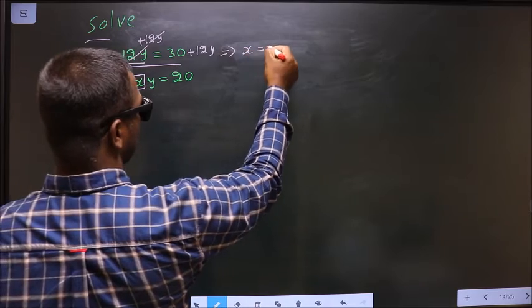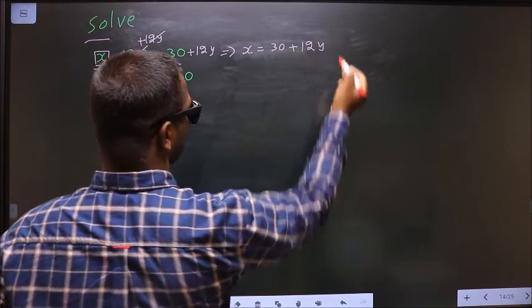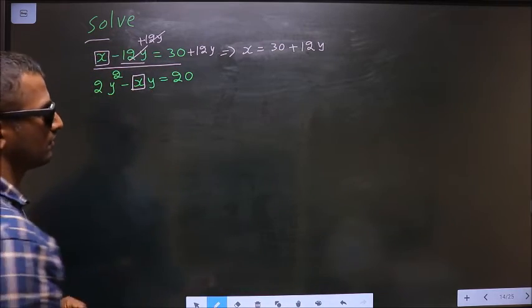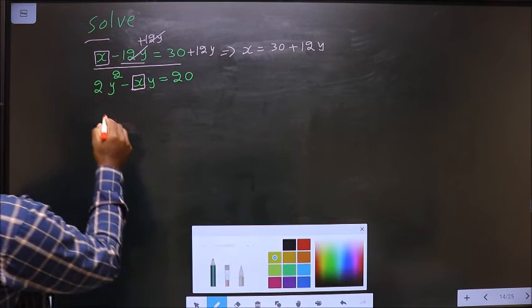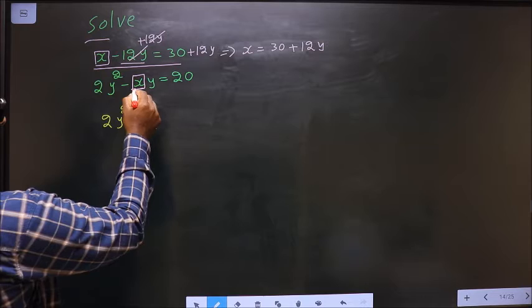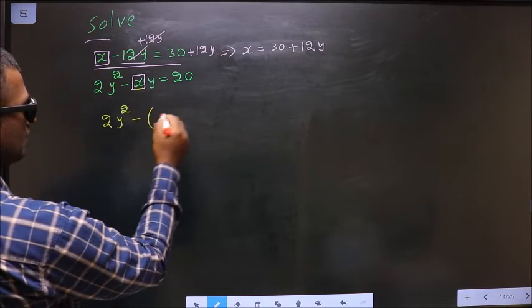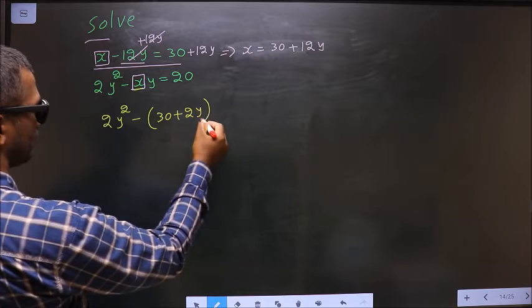I get x equal to 30 plus 12y. Now I replace x here. So I get 2y square minus in place of x 30 plus 2y.